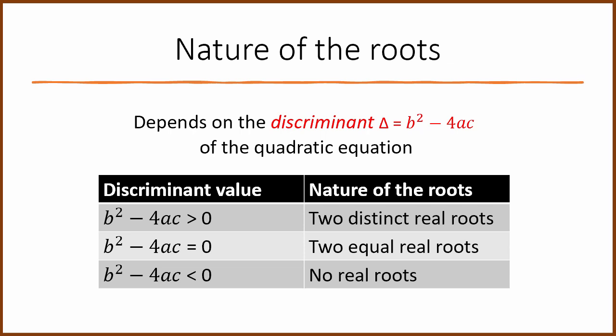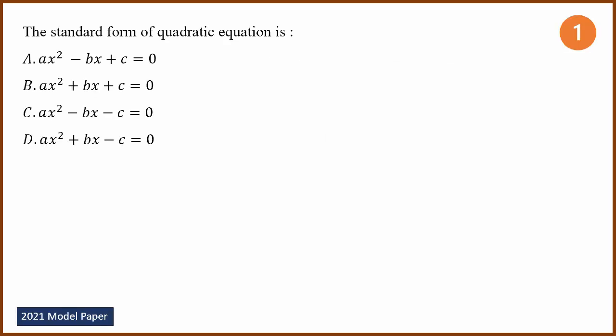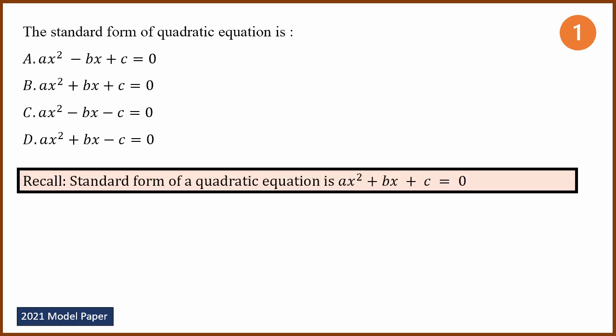Let's get to the questions. First question: it is about the standard form of a quadratic equation. As we learned, the standard form is ax squared plus bx plus c equals 0. And that is option B.